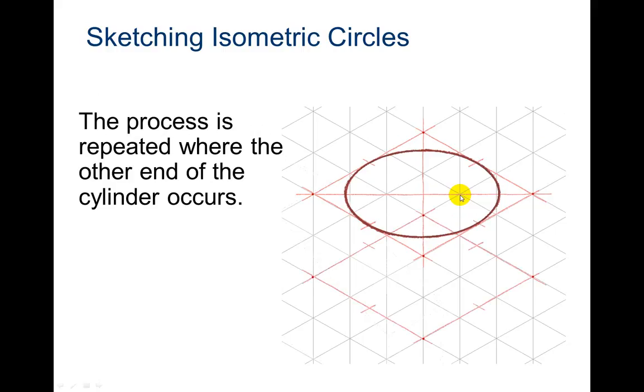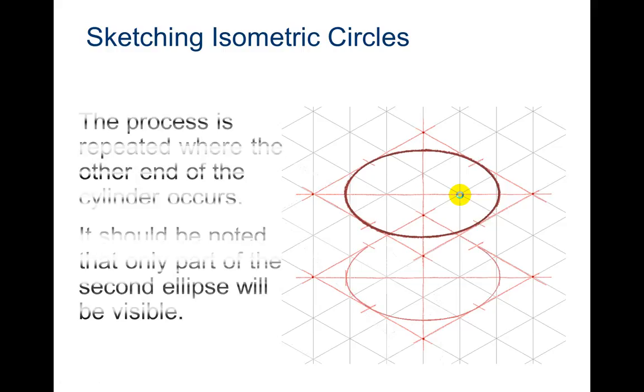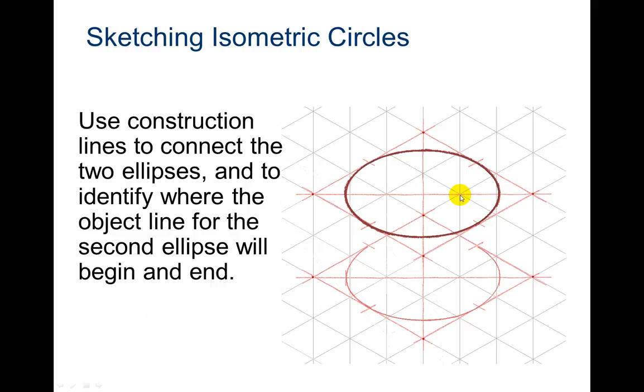So they're doing the construction line. They're doing where it's going to tangent. Where's the center point? Drawing where the ellipse is going to go to. It should be noted that only part of the second ellipse will be visible. It's only going to draw the part that is going to be seen.